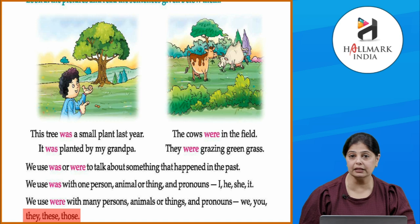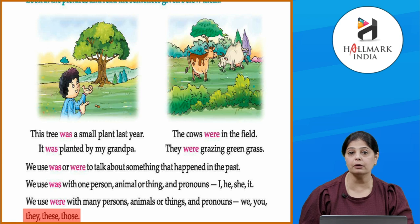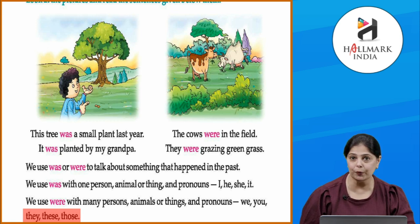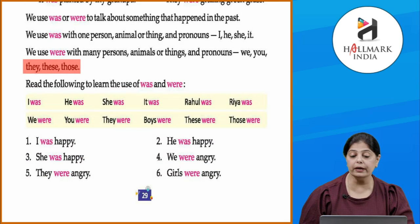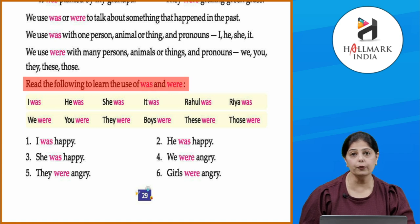Is ke liye, jab hum singular cheez ke saath use karte hain — bata rahe hain singular cheez ke baare mein — toh hota hai 'was'. But when we are talking about something which is more than one, then what do we use? Phir hum use karte hain 'were'.